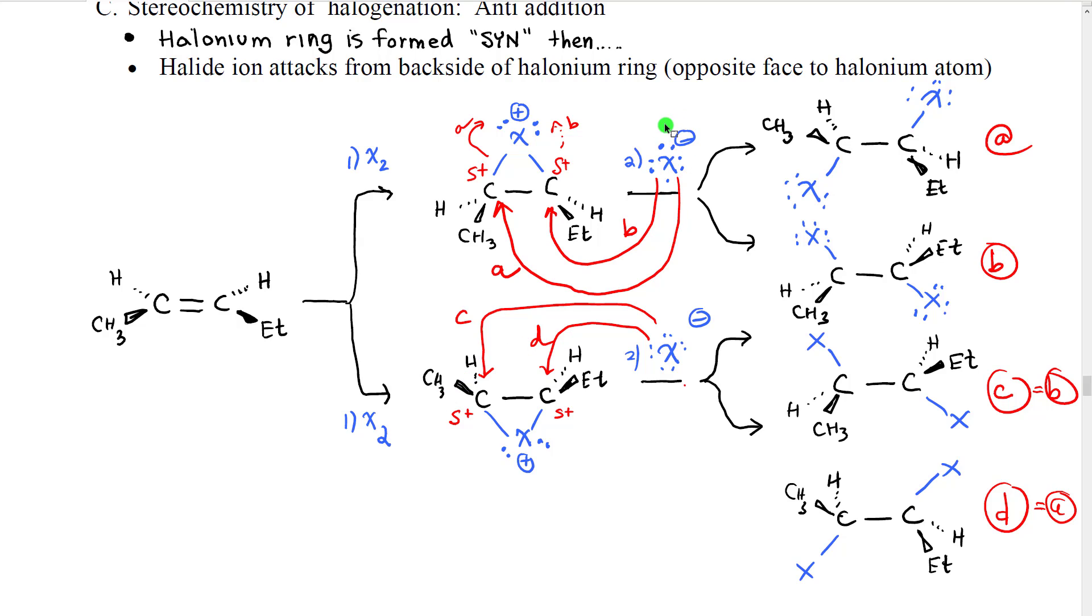At this point then, the halide ion has a choice of which carbon to attack. So we're going to look at all four possibilities. But it turns out that the halide ion is not going to want to approach from the top, because although it doesn't look like it in our representation, the large halogen of the halonium is going to essentially block approach of electrons to these carbons. Imagine it being a very large atom like this, sort of covering that whole face. So instead, the halide ion is going to approach from the opposite side in a very SN2-like reaction. It approaches from the back side, it pushes out that bond as a leaving group, and these groups will be repelled up away from it.